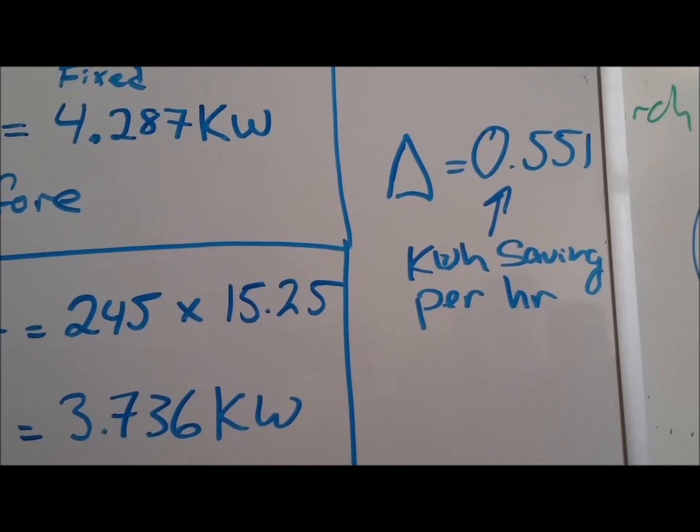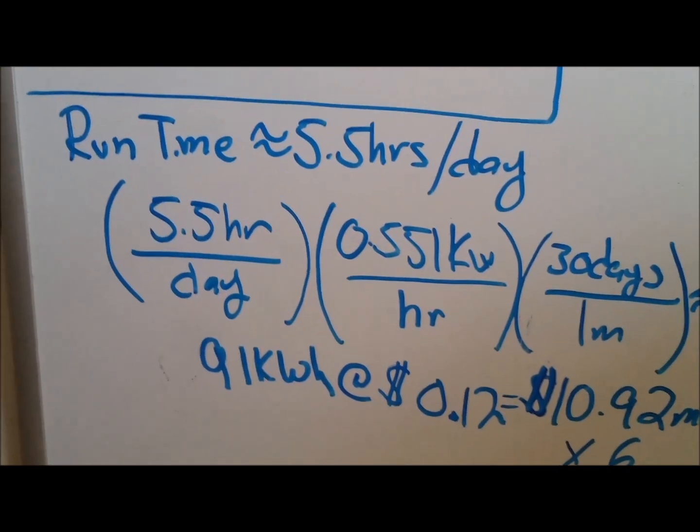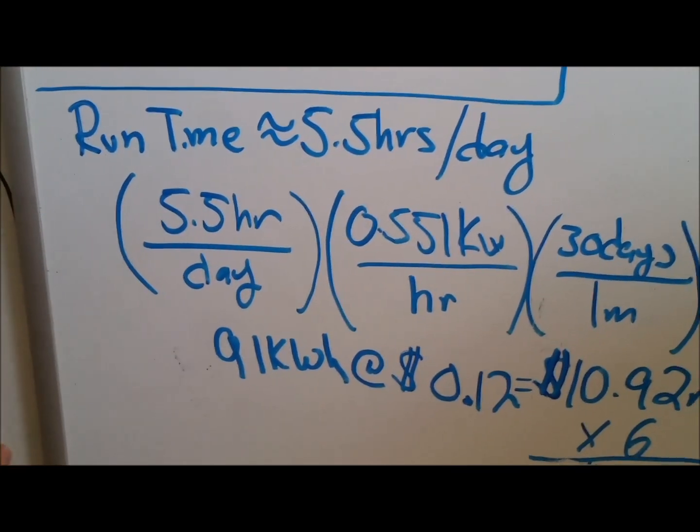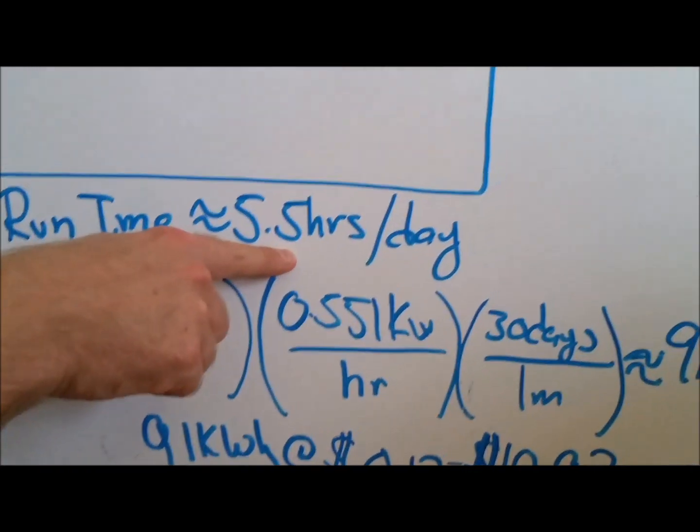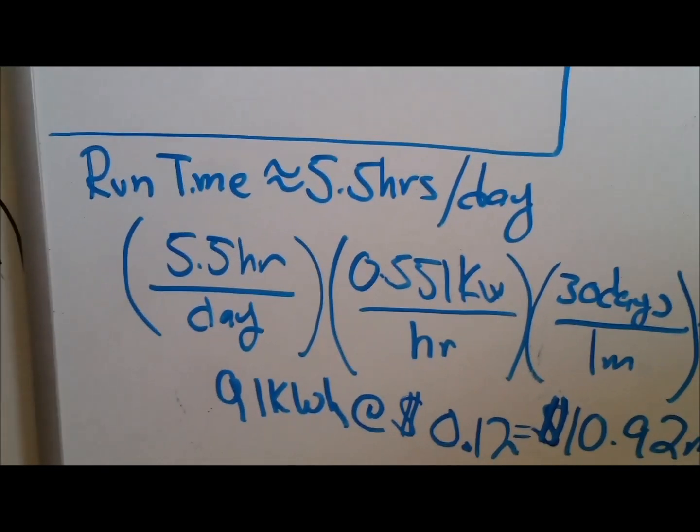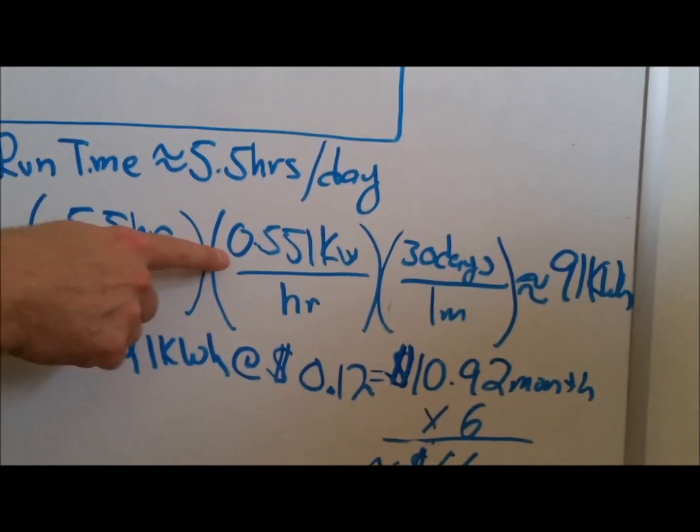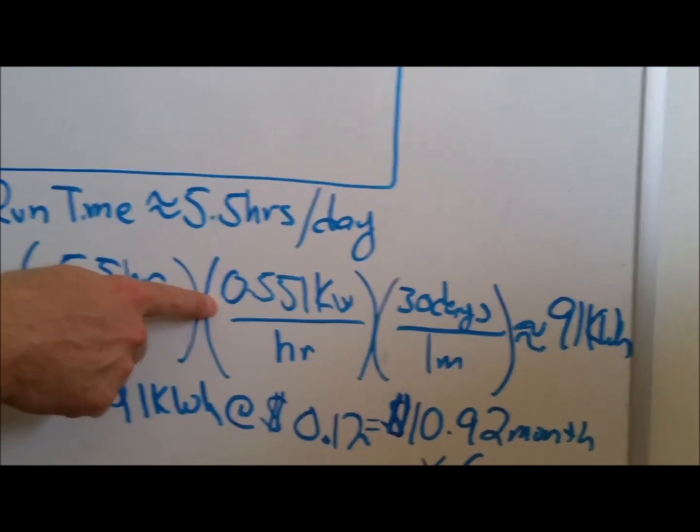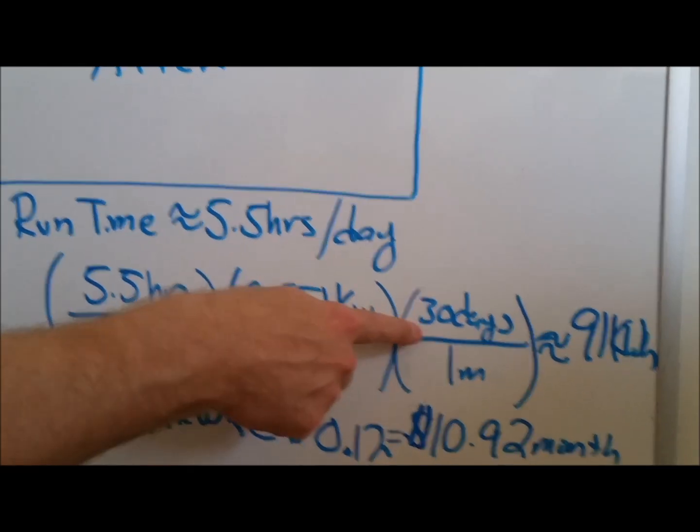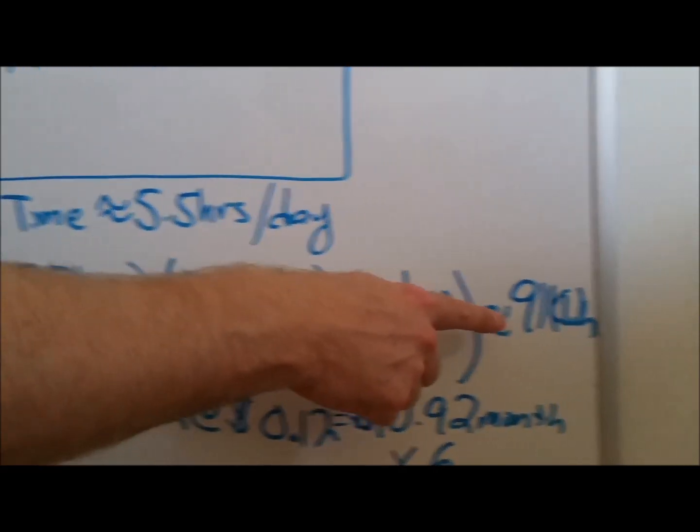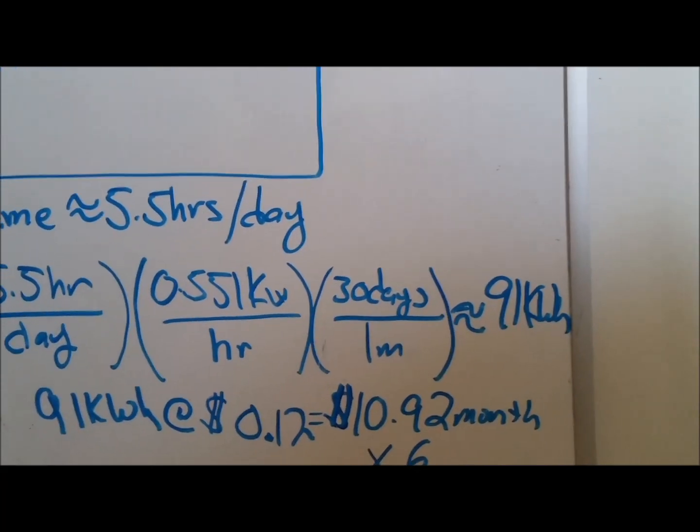So now if you want to figure out how much is this going to save you over a month's time, I got a power monitoring system in my house. So I know roughly how much my air conditioner runs. So I run my air conditioner roughly five and a half hours a day. Now if you do the math on this, at five and a half hours a day, if I'm saving 0.551 kilowatt hours or kilowatts per hour at 30 days, and one month has 30 days, then I will save roughly 91 kilowatt hours.